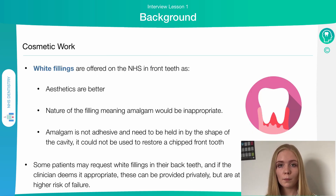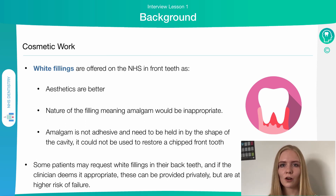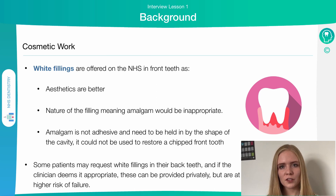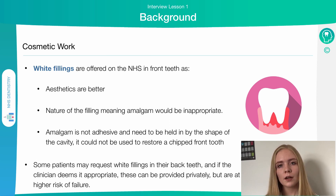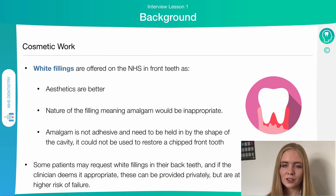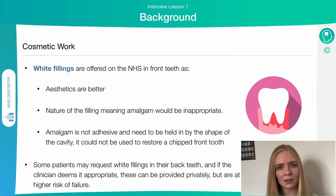Composite fillings may be offered on the NHS particularly for front teeth, where aesthetics matter more since the filling matches natural tooth colour and won't show as metal when you smile. Amalgam isn't always appropriate either — it has to be held in by mechanical force using undercuts in the tooth, as amalgam doesn't bond directly to tooth tissue, whereas composite bonds chemically. For a chipped front tooth, for example, the material needs to bond to existing tooth tissue since there are no undercuts to hold amalgam in place.